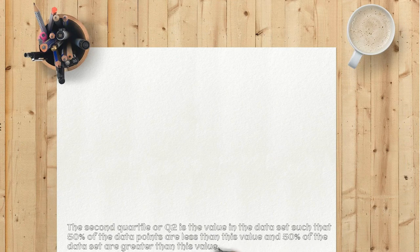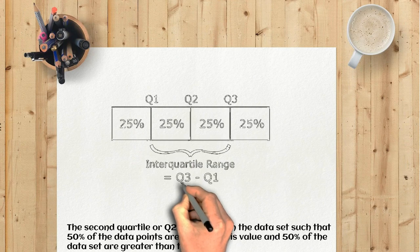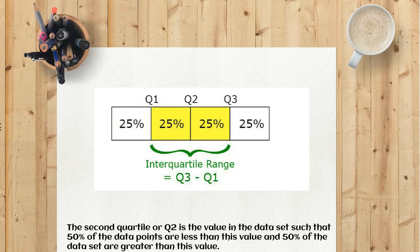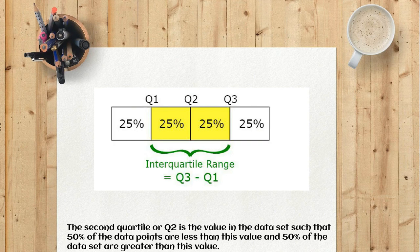The second quartile, or Q2, is the value in the data set such that 50 percent of the data points are less than this value and 50 percent of the data set are greater than this value.